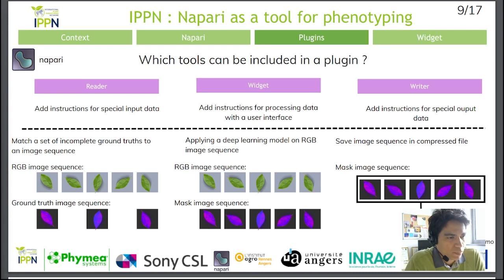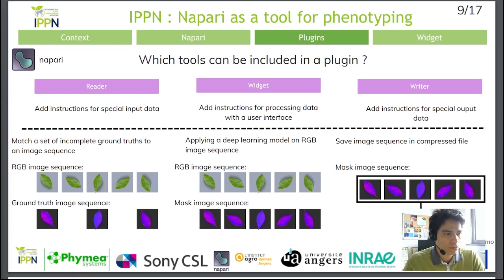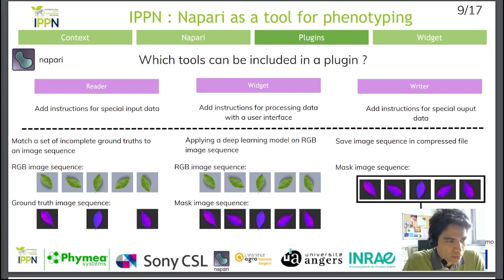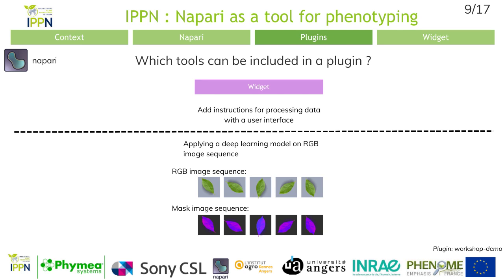For the Widget, a user can propose an image processing method. This method can be conventional or use a deep learning model, and present the method in a widget that appears in the Napari window. As a widget tool, a user can, for example, suggest a leaf segmentation method to complete the mask dataset from our previous example.